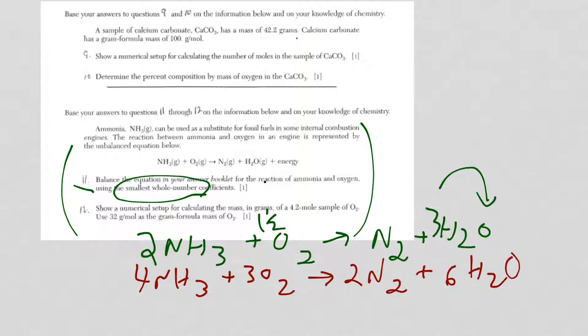Always go back and recheck. 4 nitrogens, 4 nitrogens. 4 times 3, 12 hydrogens. 6 times 2, 12 hydrogens. 6 oxygens, 6 times 1, 6. It's balanced.